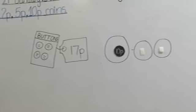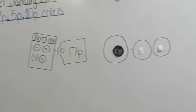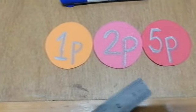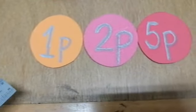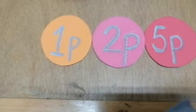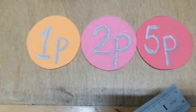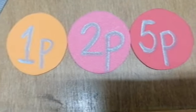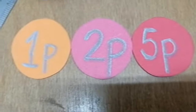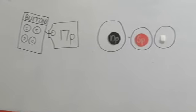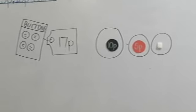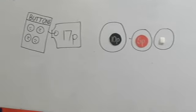Ab humein 7 paisa ki aur zaroorat hai is buttons ke pack ko purchase karne ke liye. Humare paas coins hain: 1 paisa, 2 paisa, and 5 paisa. Ab hum kya karenge — phir dekhenge is mein sabse bada number kaun sa hai, sabse bada coin kaun sa hai. So humare paas is time sabse bada coin 5 paisa ka hai. 10 plus 5 kitne hote hain?